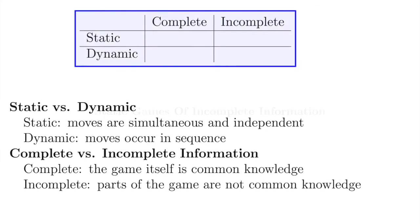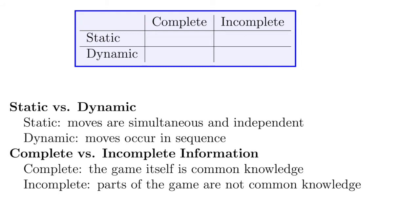We'll begin by exploring static games of incomplete information and contrasting them with other types of games. Let's pay our last visit to the classification of non-cooperative games. A game is a setting in which players strategically interact, so we need players and rules. Static games are games in which players move simultaneously and independently.